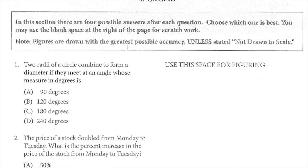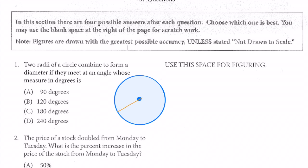So our first question is: do radii of a circle combine to form a diameter if they meet at an angle whose measure in degrees is? We need to figure out what that angle is going to be. Let's say that's the center — we're forming a diameter. A diameter is just a line that goes from one side to the other through the center of the circle. So that is the diameter.